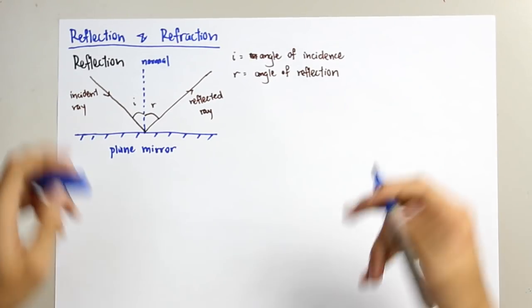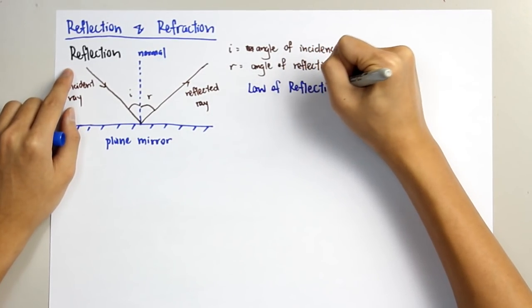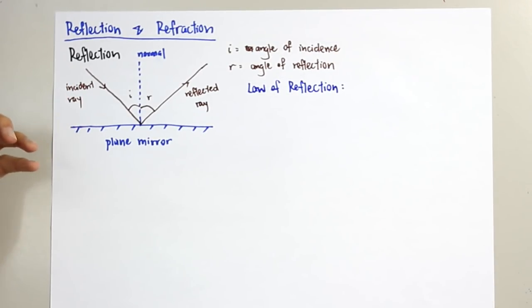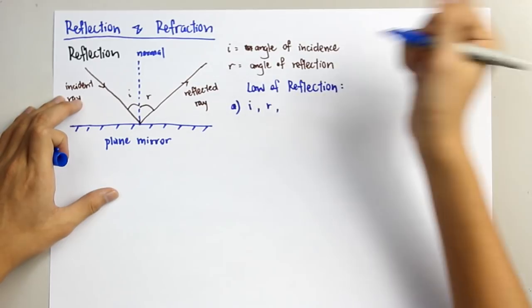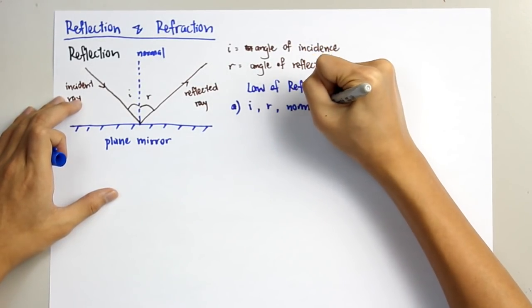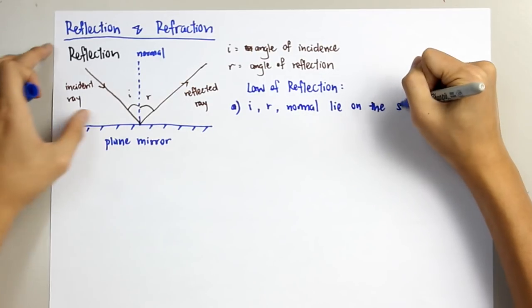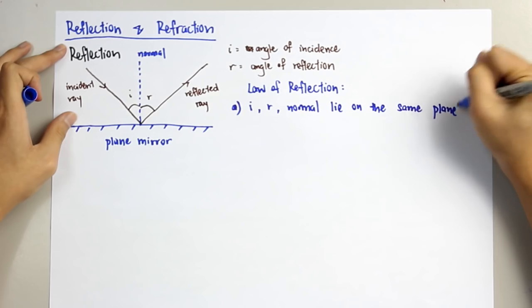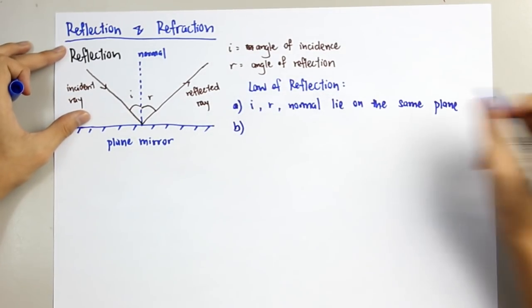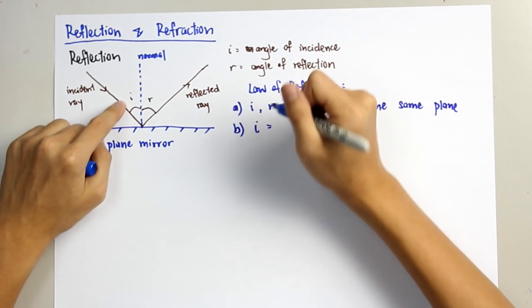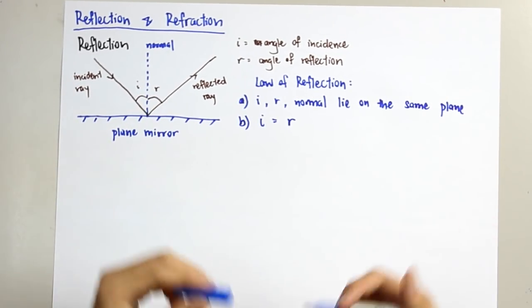Based on the law of reflection, there are two conditions. The first condition: the incident ray, the angle of reflection, and the normal — these three lines — must lie on the same plane. The second condition: the angle of incidence, I, must equal the angle of reflection, R. So these two angles are the same.